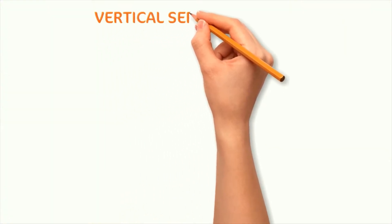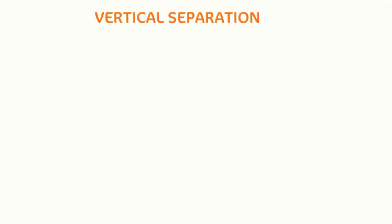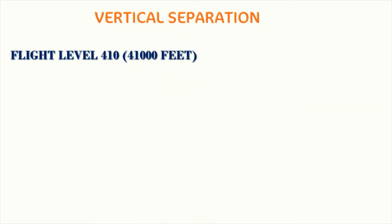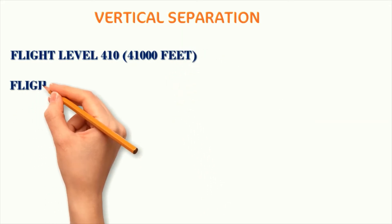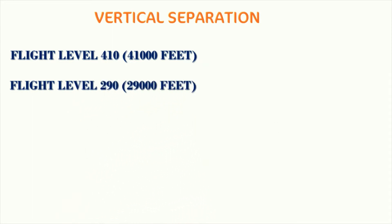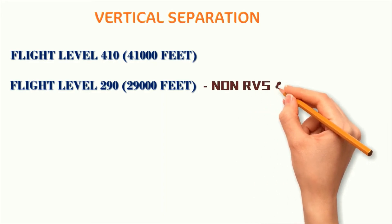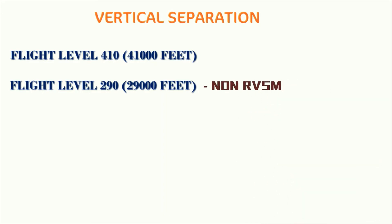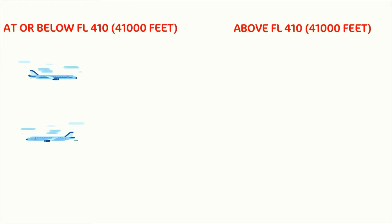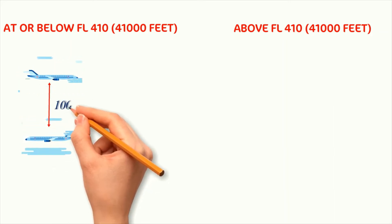When talking about vertical separation, we should keep an important altitude in mind — that is flight level 410, which approximately translates into 41,000 feet. In some airspaces this altitude can be flight level 290, or 29,000 feet; such an airspace is called non-RVSM airspace. These airspaces are very rare, so let's concentrate on 41,000 feet. All aircraft flying at or below flight level 410 are separated vertically by 1,000 feet.